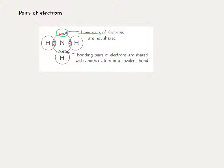The other pairs of electrons are described as bonding pairs of electrons, and ammonia has three of those pairs — one for each covalent bond that it shares with the hydrogen.